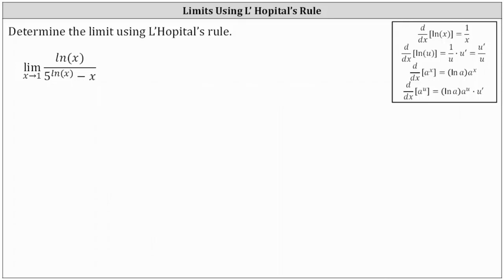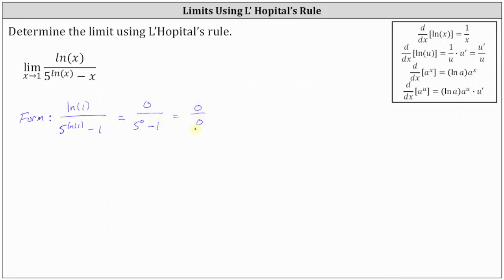We're asked to determine the limit using L'Hôpital's rule. The first step is to check the form of the limit by performing direct substitution. If we substitute one for x, we have natural log one divided by the difference of five to the power of natural log one minus one. Natural log one is equal to zero, which gives us zero divided by five to the zero minus one. Five to the zero is one, which gives us the form of zero divided by zero, one of the indeterminate forms.